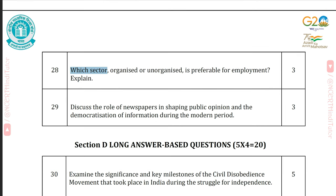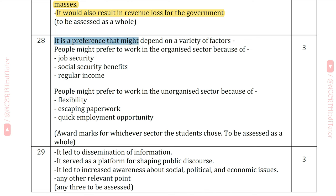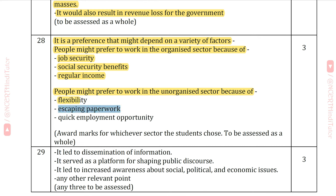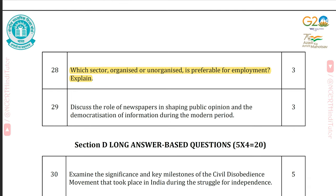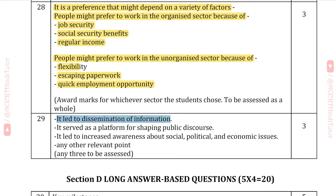Question 28: Which sector — organized or unorganized — is preferable for employment? Answer: It depends on various factors. People might prefer the organized sector for job security, social security benefits, and regular income. People might prefer the unorganized sector for flexibility, escaping paperwork, and quick employment opportunities. Question 29: Discuss the role of newspapers in shaping public opinion and the democratization of information during the modern period. Answer: Newspapers led to dissemination of information, served as a platform for shaping public discourse, and led to increased awareness about social, political and economic issues.